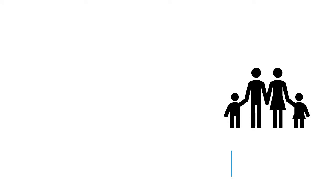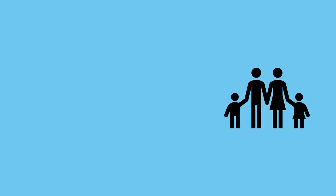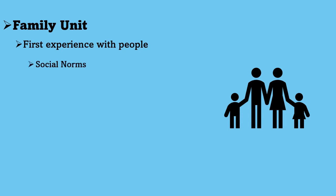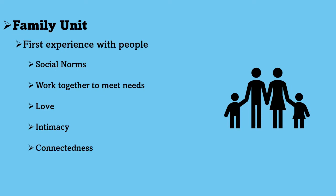What is the Family Systems Model? Well, first, let us talk about the Family Unit. The Family Unit is our first experience with other people. It is our first society where we learn about social norms, work together to ensure needs are met, and experience love, intimacy, connectedness, and belonging as we operate as part of a unit.